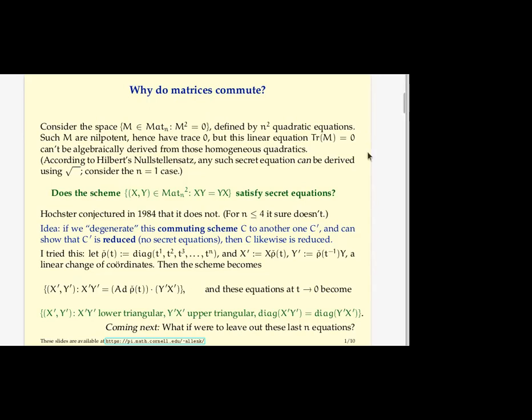So nobody knows whether there are secret equations on the space of pairs of commuting matrices. You can check it for small sizes, like up to 4×4 easily enough, using, you can say, does i double equal radical of i in Macaulay 2? And find out that it's fine, there aren't secret equations, but that doesn't tell you for all n by n.